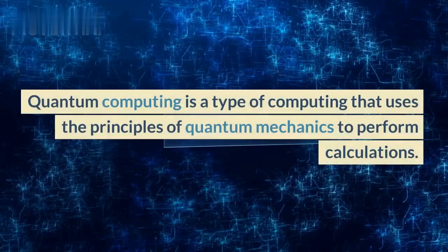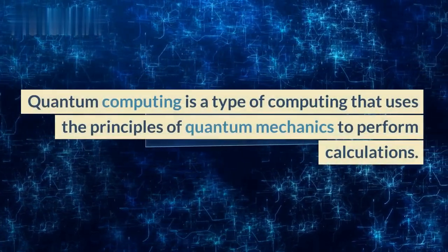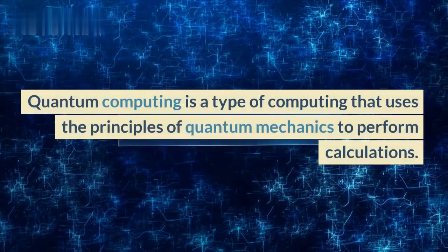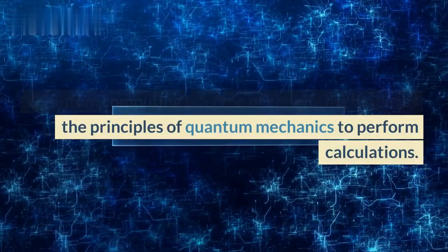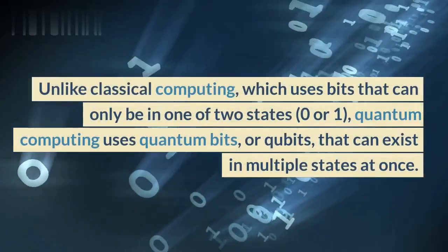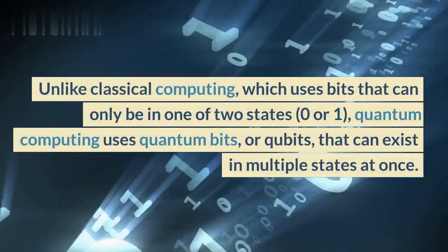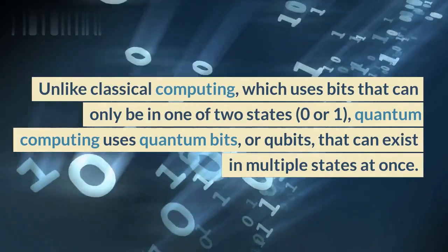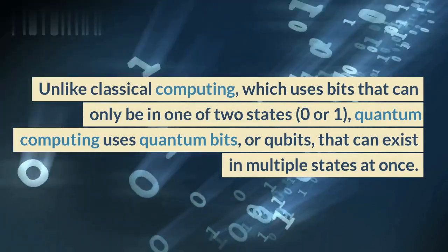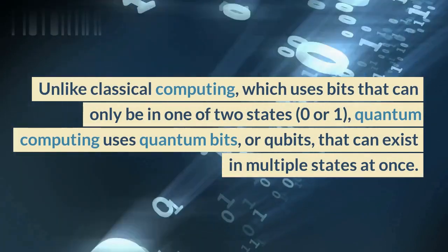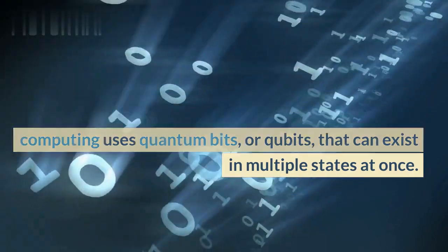Quantum computing is a type of computing that uses the principles of quantum mechanics to perform calculations. Unlike classical computing, which uses bits that can only be in one of two states — zero or one — quantum computing uses quantum bits, or qubits, that can exist in multiple states at once.